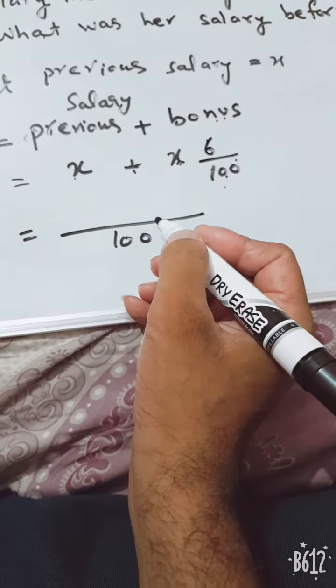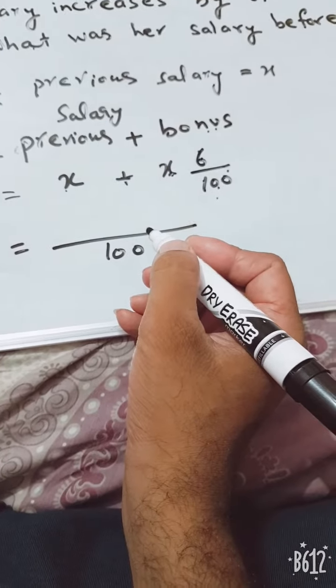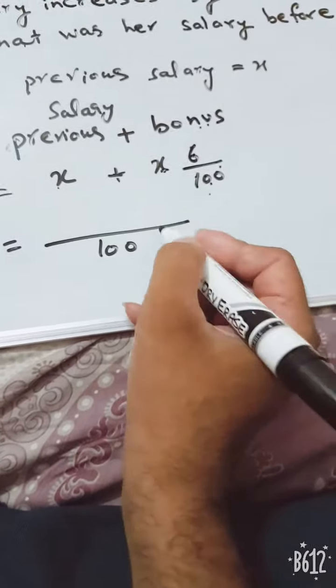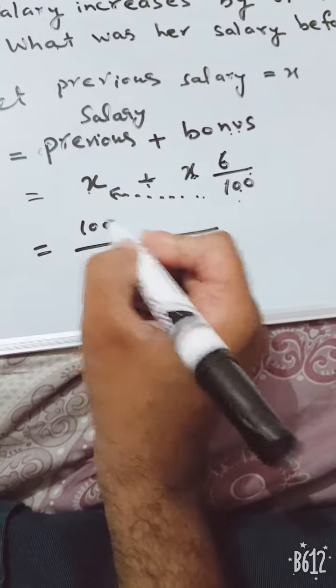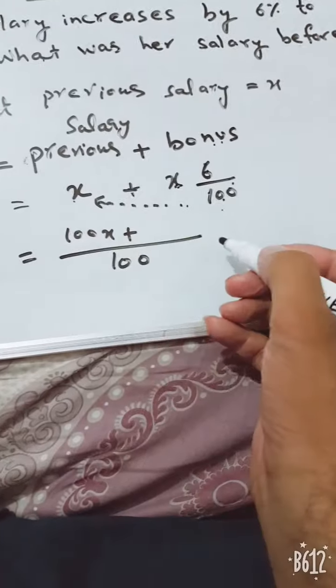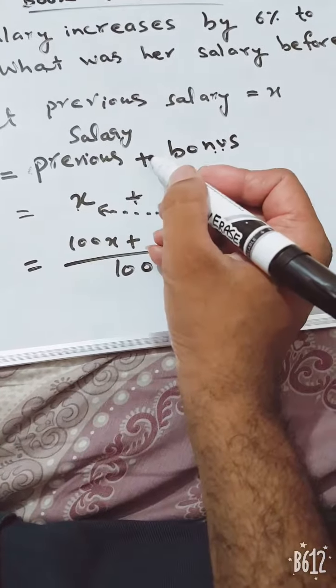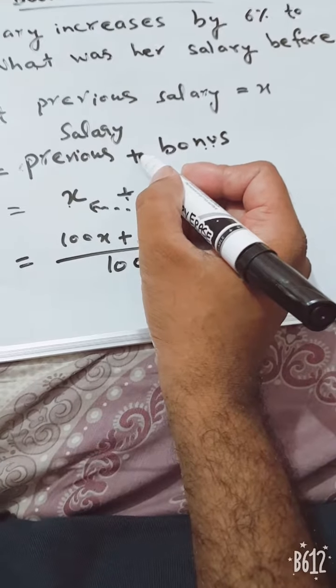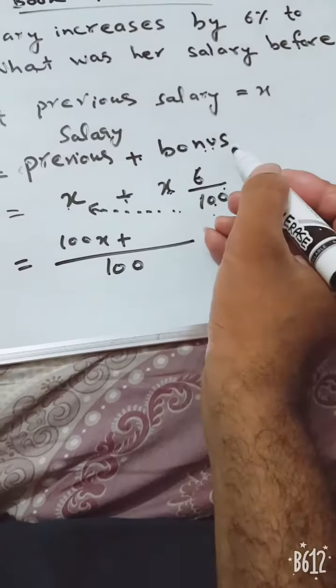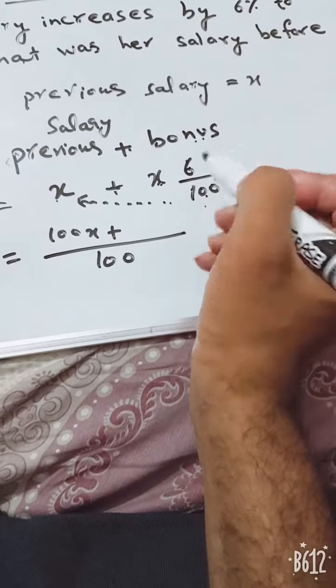In question number 5, I have taught you this method. How to take the LCM? 100 will be multiplied here. It will become 100x. But in question number 5, we used a subtraction sign. There was another method. That was the matter of discount.